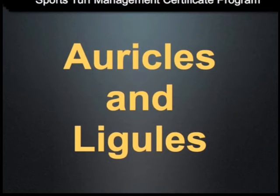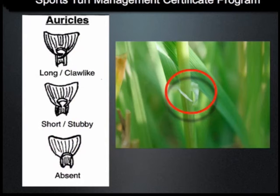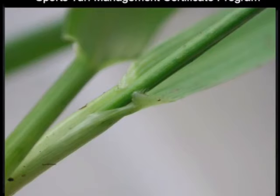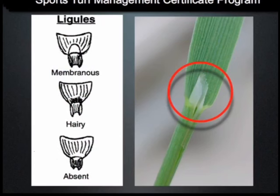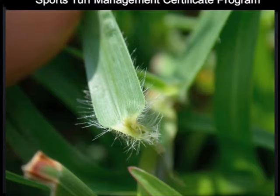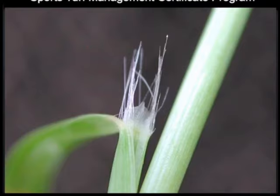Two common features on turf grasses are the auricles and ligules. Auricles are appendages that project from the collar. They can be claw-like, as they are on this annual ryegrass picture, short and stubby, or absent. The ligules are structures found at the junction of the stem and leaf sheath. Ligules can be membranous, hairy, membranous and hairy, or absent.